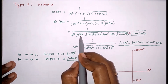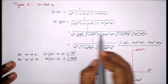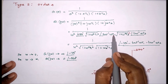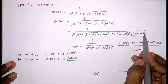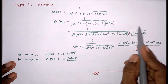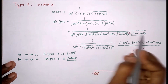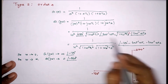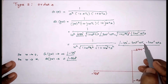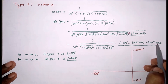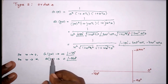For the angle, since all terms are in the denominator, we add: 180° + tan⁻¹(ωT₁) + tan⁻¹(ωT₂). Taking everything to the numerator makes them negative, so the total angle equals −180° − tan⁻¹(ωT₁) − tan⁻¹(ωT₂).